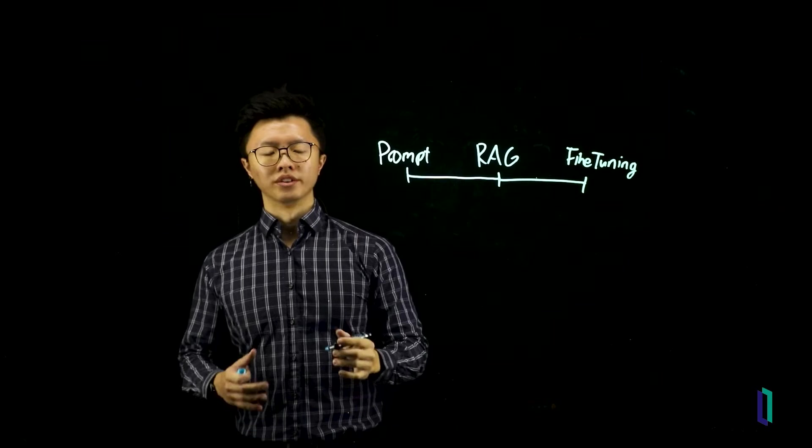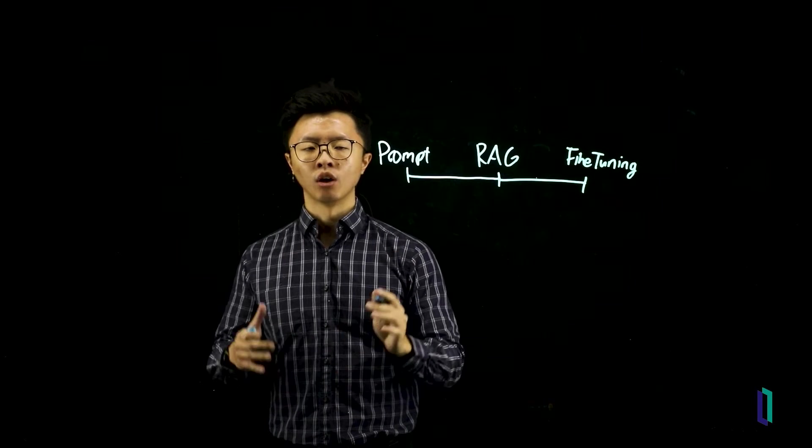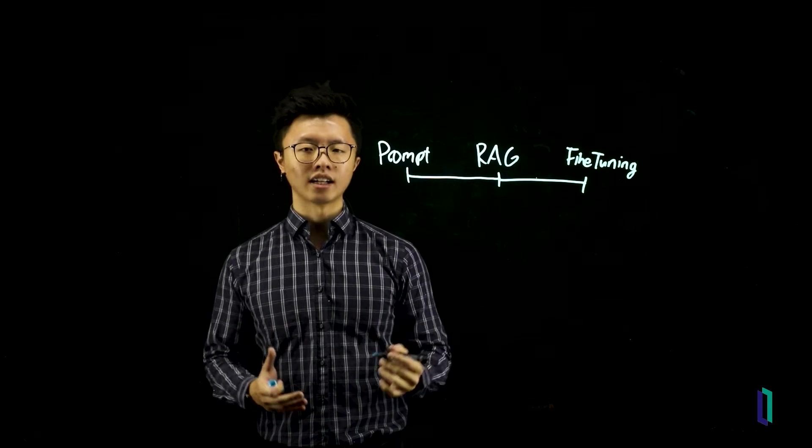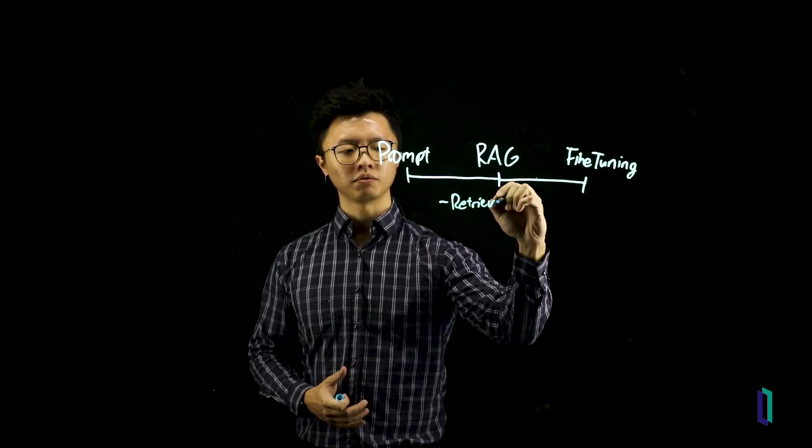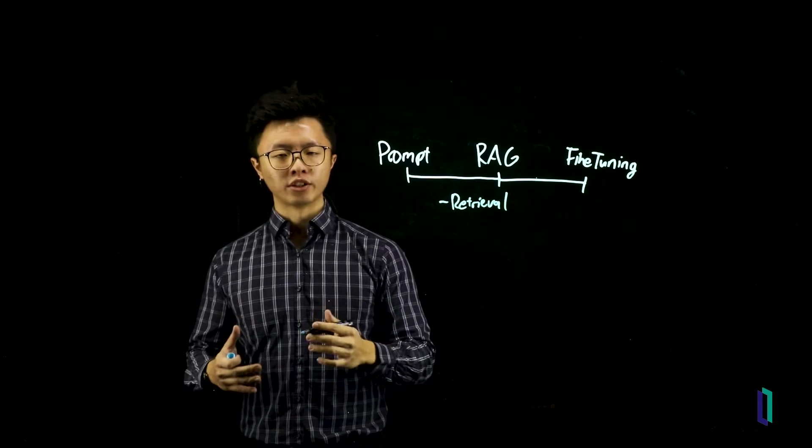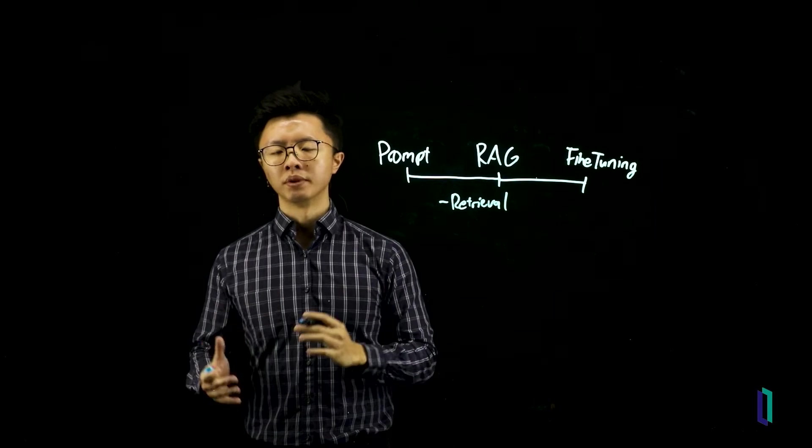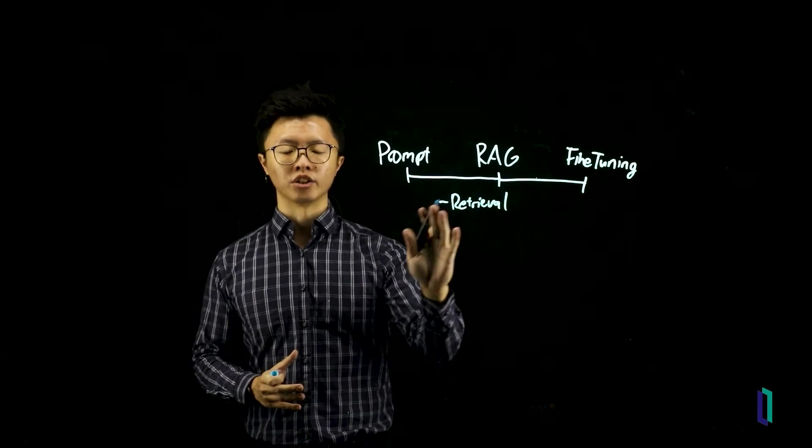So most AI projects will definitely have some level of prompt engineering. So let's talk about the differences between RAG and fine-tuning. Now RAG is great for tasks that involve retrieval of information. If all your use case requires is retrieving relevant information and getting a general-purpose AI to understand it and give a response, then RAG is your best bet.